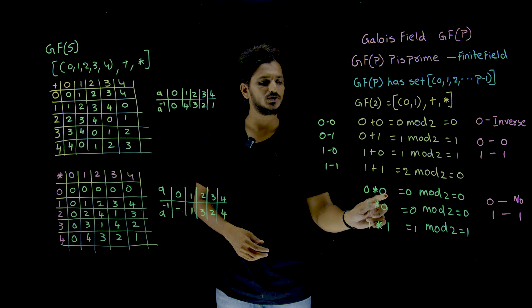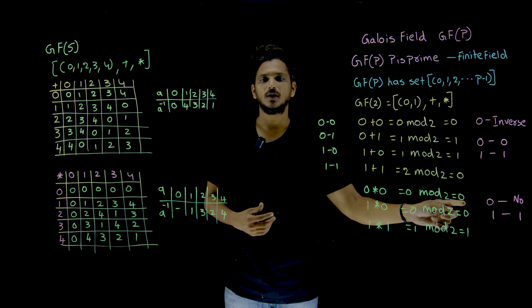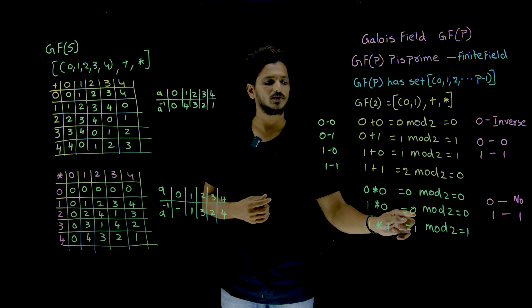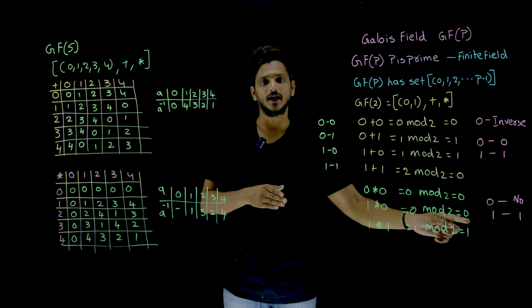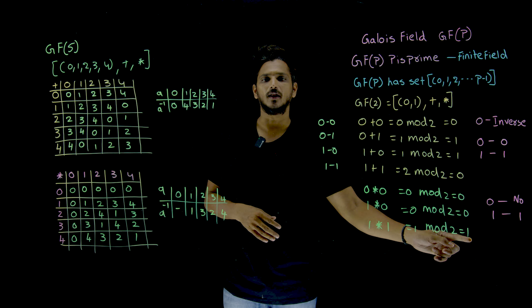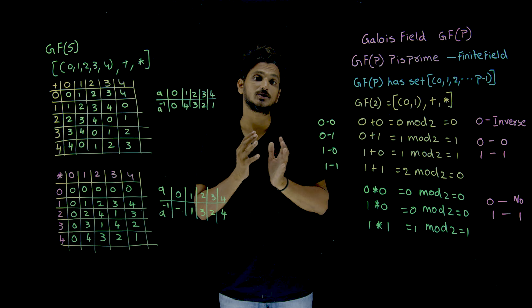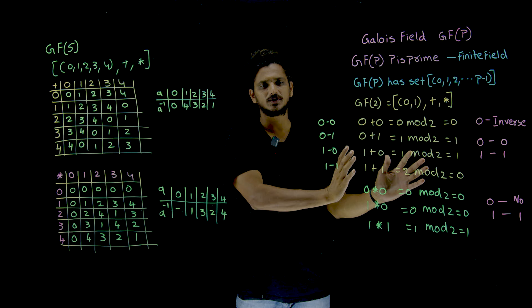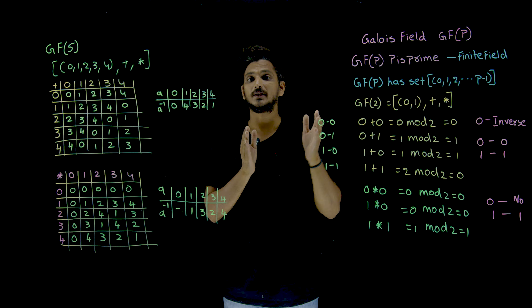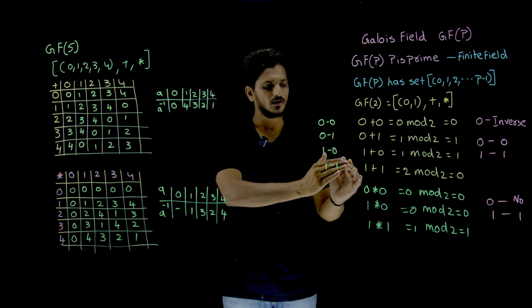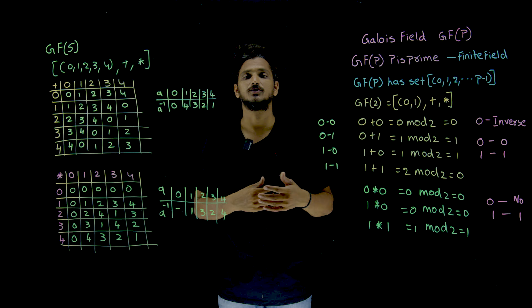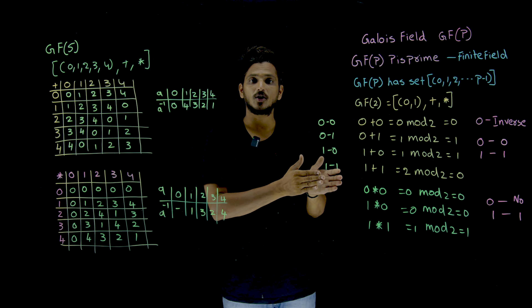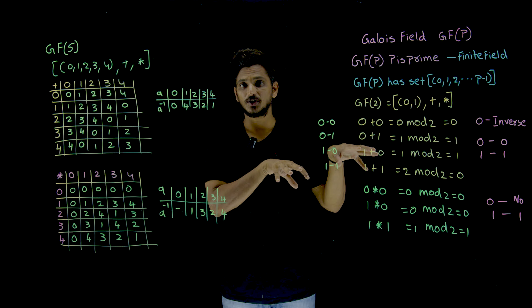Similarly, for multiplication: 0 and 0 gives output 0 — AND operation: 0 AND 0 is 0. 1 and 0 gives 0. 1 AND 1 gives output 1. So for multiplication, the shortcut is the AND operation. You can do modulus operation — that is the actual procedure — but the shortcut for GF(2) is: plus and minus satisfies XOR, multiplication satisfies AND. We use XOR and AND operations in cryptography, which is why we mention them here.